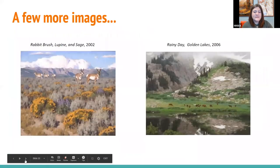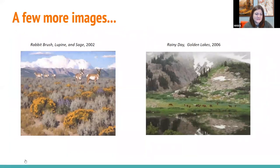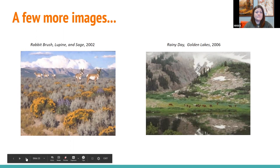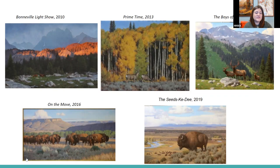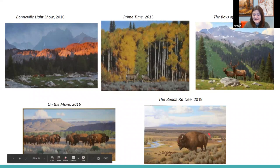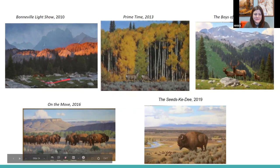Here are a few more images to give you a glimpse of what to expect: Rabbit Brush, Lupin, and Sage (2002); Rainy Day, Golden Lakes; Bonneville Light Show, very dramatic; Prime Time; The Boys of Summer — he's got some elk, some deer, some horses, and bison. It's interesting to ask: is it a landscape with an animal in it, or an animal painting with a landscape behind it? This one's definitely an animal painting with a landscape behind it; this one's definitely a landscape with an animal in it.